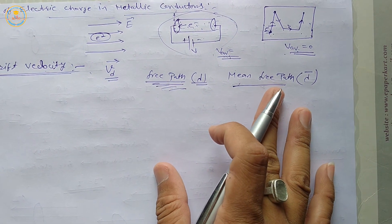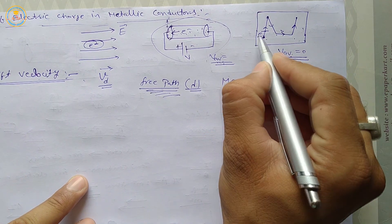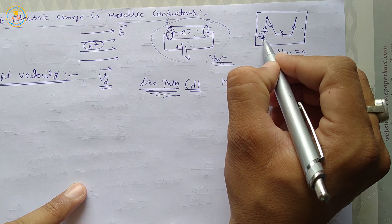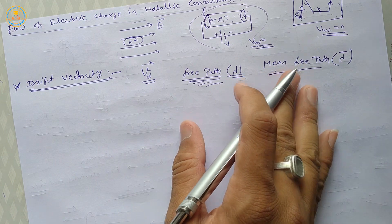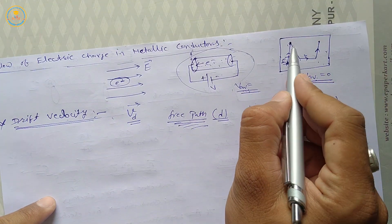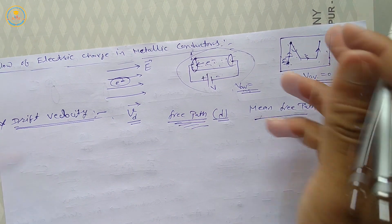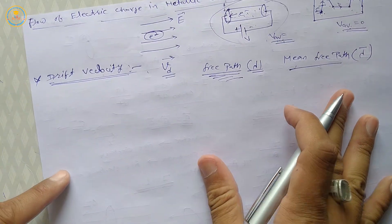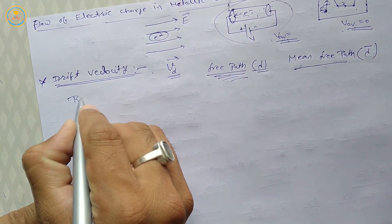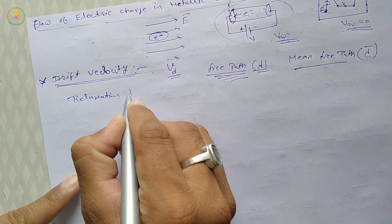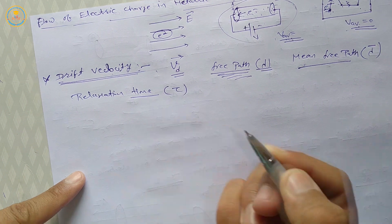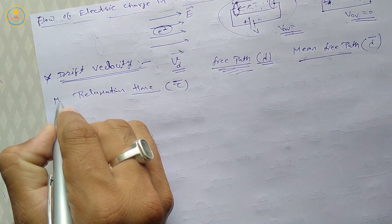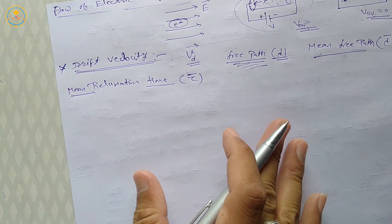The time taken by a free electron between two consecutive collisions is called relaxation time. The mean relaxation time is represented by tau-bar (τ̄).